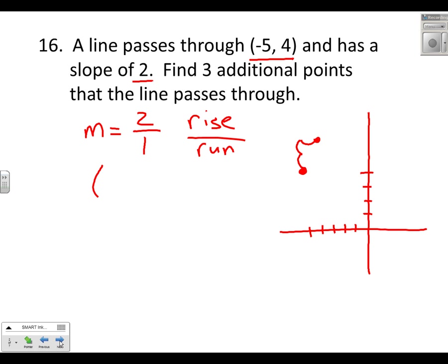But I think we could do that without the aid of a graph. If we realize our current height is 4, to get to the next point, if we rise 2, we go from 4 up to 6. If we run 1, or increase, move to the right 1, we move from negative 5 to negative 4. And a second point, let's just continue that process. From 6 we rise 2 to 8. From negative 4, 1 to the right, we run 1 to the right, negative 3. Rise 2 from 8, 10. Run 1 to the right from negative 3, negative 2. So there's three points.